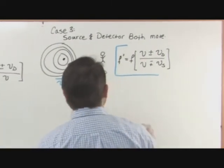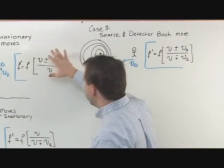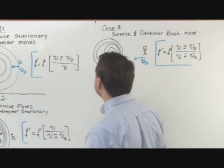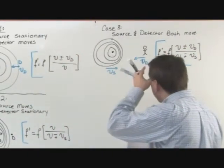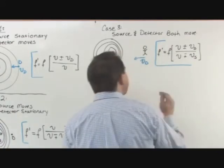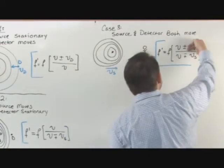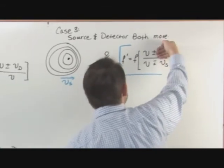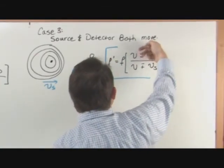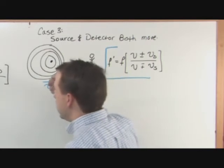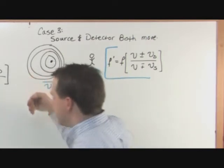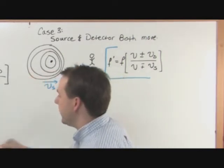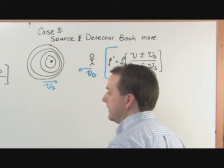Because if you look at them, they really do look like, if you were to take these two and kind of overlap them on top of each other, it looks like they would kind of encompass them. And in fact, they do. If you take the detector as not moving, so put a zero here, put a zero here, then you get V over V plus V S. So if the detector is not moving, you're going to get this guy right here, which is exactly what we said.